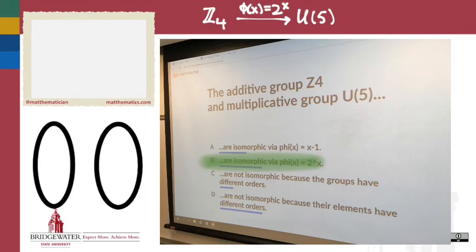If you map it out, the first circle you have 0, 1, 2, 3—that's Z4. And then 1, 2, 3, 4—the multiplicative units mod 5.